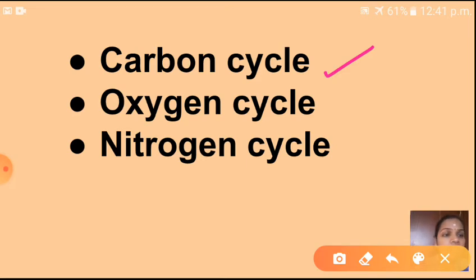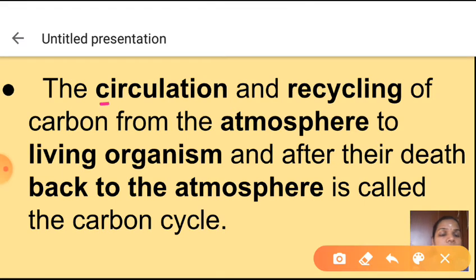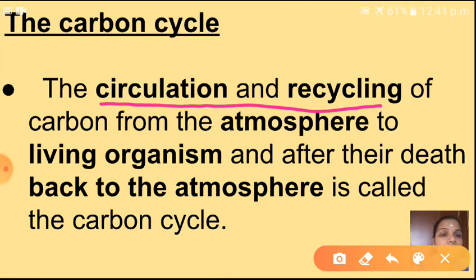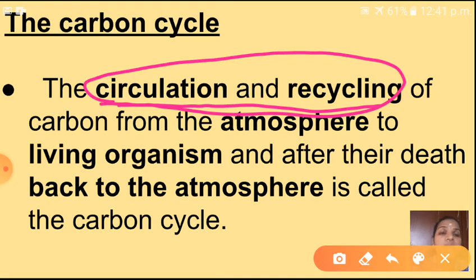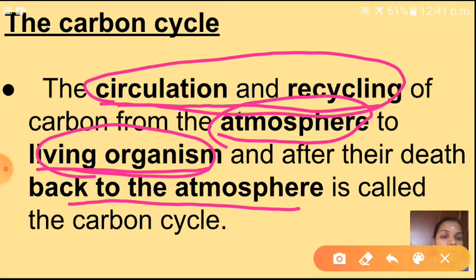What is meant by the carbon cycle? The circulation and recycling of carbon from the atmosphere to living organisms and, after their death, back to the atmosphere is called the carbon cycle. So it flows from the atmosphere to living organisms, and after death, back to the atmosphere — a cyclic flow.